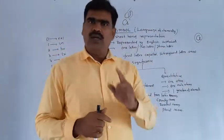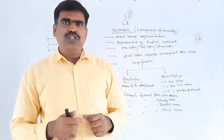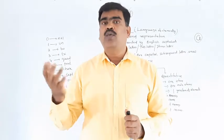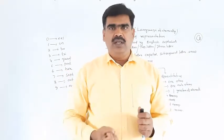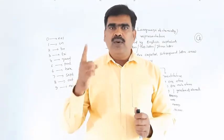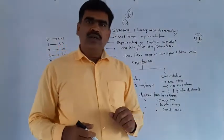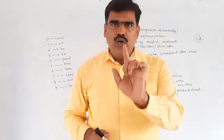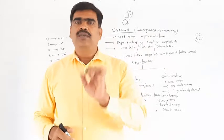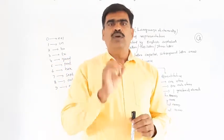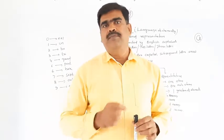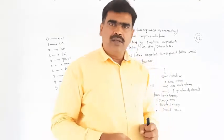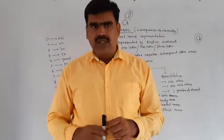There are two significances of a symbol: one is qualitative and one is quantitative. The qualitative significance means: when you write Cl, it represents the chlorine element — it is just the name. Quality means name only.